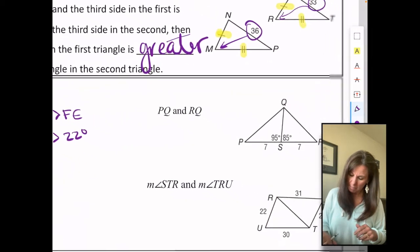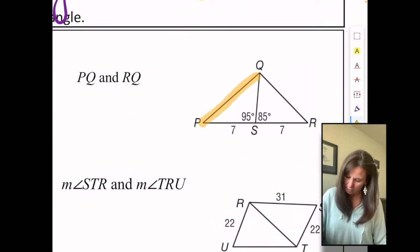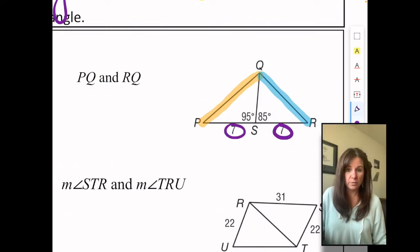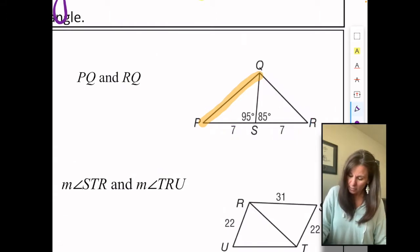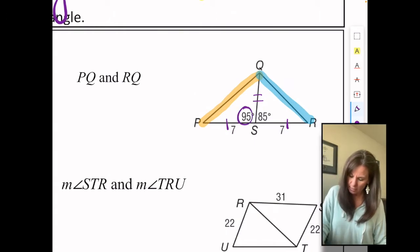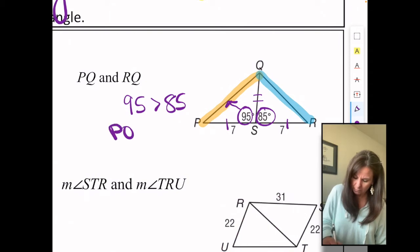Let's try this one over here. PQ and RQ. So what are we comparing here? We've got PQ and RQ. Now they haven't given us congruent markings, but we know that those two sides are congruent because they're both seven. And like the last one, they share the side. So we've got corresponding congruent sides. Now we just have to compare the angles. So it's 95 and 85. So 95 is greater than 85. So across from 95, that's PQ, is greater than what's across from 85, which is RQ.